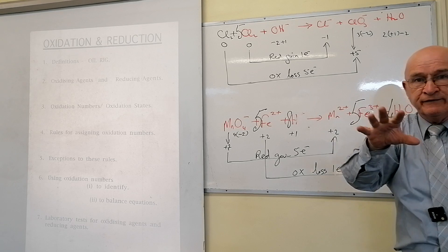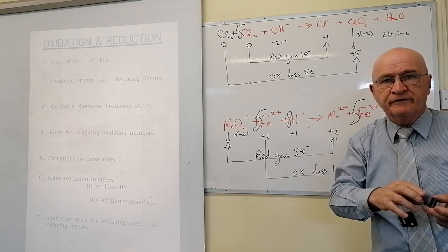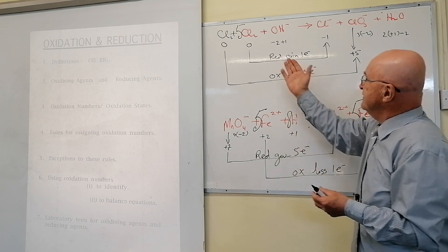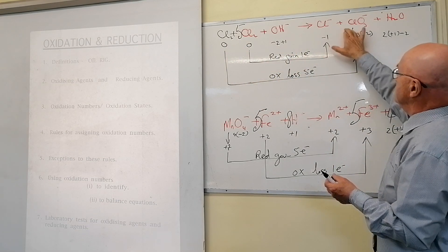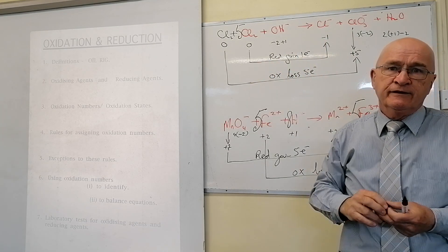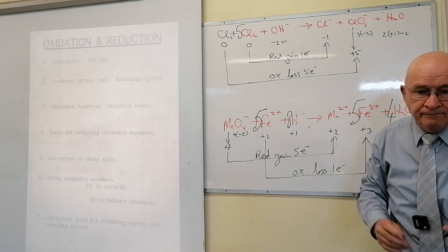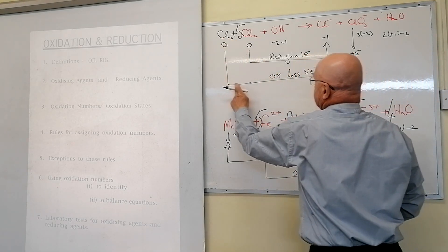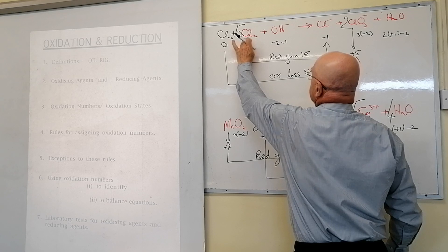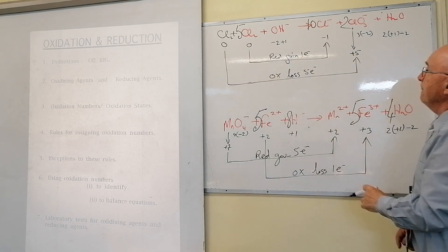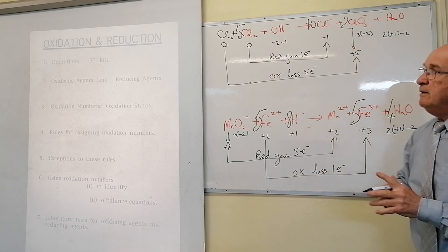The problem is that multiple combinations of coefficients seem to balance the chlorines — eleven and one, ten and two, eight and four, and so on. The rule here is: follow the arrows. Two chlorines on the oxidized side — put a two there. Ten chlorines on the reduced side — put a ten there. That gives twelve and twelve. The chlorines are now balanced.